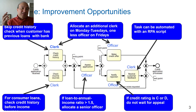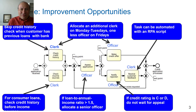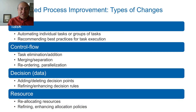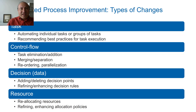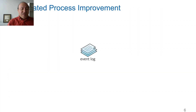What we want in automated process improvement is to build a search-based process optimizer that identifies all these different opportunities: opportunities to automate tasks, recommendations on how to perform certain tasks in a more streamlined way, recommendations on how to reorder, merge, or parallelize tasks, recommendations on how to improve the way we route cases in the process and the decision logic, and recommendations on how to improve resource allocation in the process.